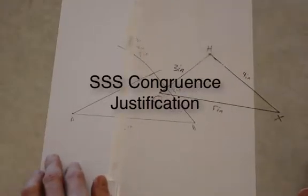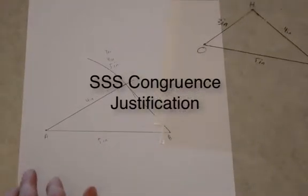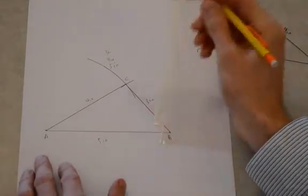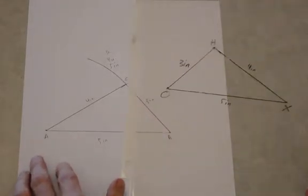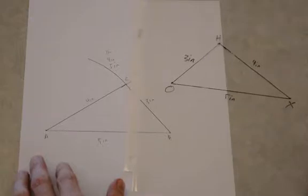So these two triangles, triangle ABC, we'll label that, and triangle OXH were created using three given side lengths only, side lengths of 3 inches, 4 inches, and 5 inches.